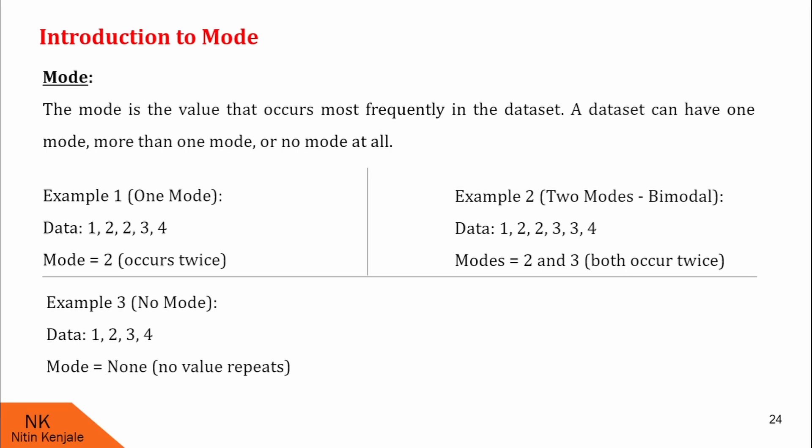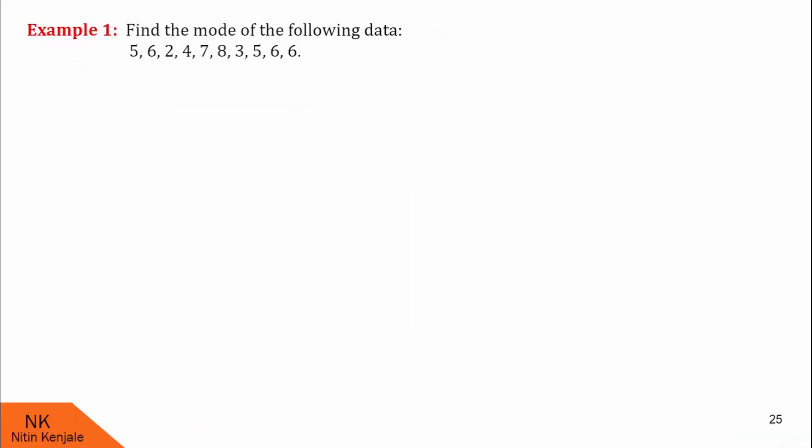Now let us see some more examples based on this concept. Here in this example, we are asked to find mode of the following data. This is the given data. Let us proceed for the solution. Here, we see the value 6 occurs three times. Since this value is occurring more number of times than the other values, this is mode of the given data. So here mode is 6.